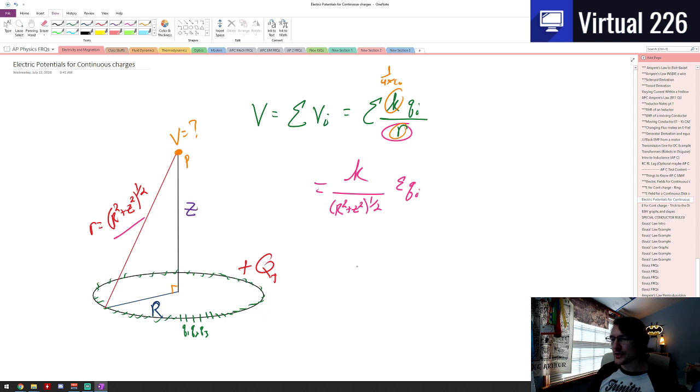So you actually know that the voltage due to a ring of charge is just equal to K times whatever charge you have on the ring, divided by the ring's radius squared plus z squared, that distance away, to the one-half. Depending on the problem, we do this for a ring here. If you had an arc of charge, this actually works the exact same way.